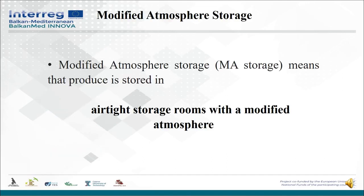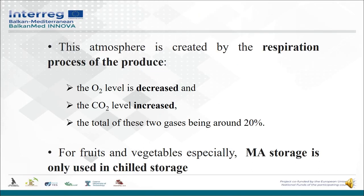Beside the modified atmosphere packaging, let's consider the modified atmosphere storage, which means that the produce is stored in an airtight storage room with a modified atmosphere. This atmosphere is created by the respiration process of the produce, where the oxygen level is decreased and carbon dioxide level is increased, with the total of the two gases being around 20%. Modified atmosphere storage is used in the case of fruits and vegetables, especially only with chilled storage.